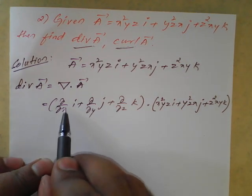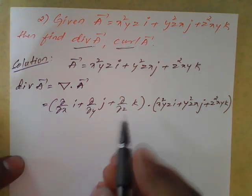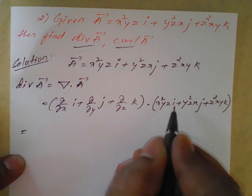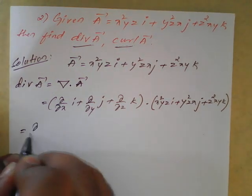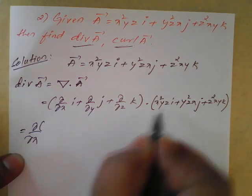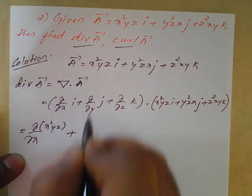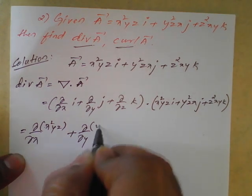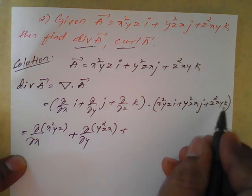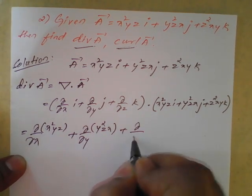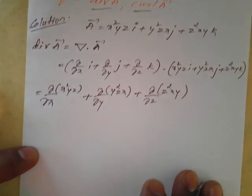Del is: dou by dou x of i plus dou by dou y of j plus dou by dou z of k, dot with vector A which is x squared yz of i plus y squared zx of j plus z squared xy of k. We need to go for the dot product — i term multiplies with i, j term with j, k term with k. So i dot i becomes 1, j dot j becomes 1, k dot k becomes 1. Therefore it becomes: dou by dou x of (x squared yz) plus dou by dou y of (y squared zx) plus dou by dou z of (z squared xy).